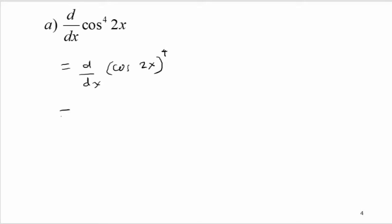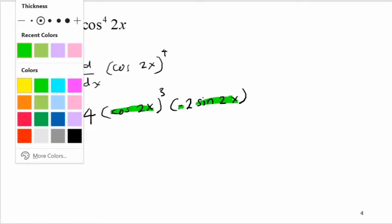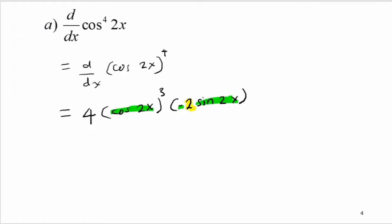To differentiate (cos 2x)⁴, we bring 4 as the coefficient, copy back cos 2x, subtract the power by 1 to get power 3, then differentiate inside the bracket. Differentiating cos 2x gives −sin 2x, and differentiating 2x gives 2. So that is the answer for question a.